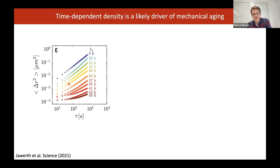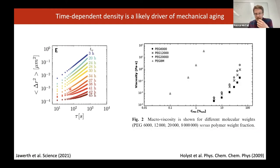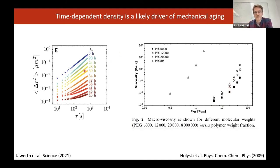To wrap up: biomolecular condensates are a class of subcellular structures involved in a large number of processes, and their composition plays an essential role in determining the physical properties that underlie their functionality in cells. Quantitative phase microscopy allows us to precisely measure their composition without recourse to labels, which it turns out can be rather confounding. By tuning the sequence composition of RNA binding proteins, we can vary the droplet density over a wide range from 6% to 30% protein.